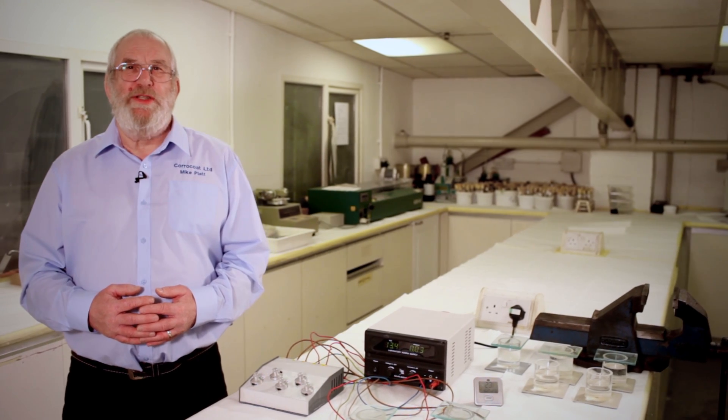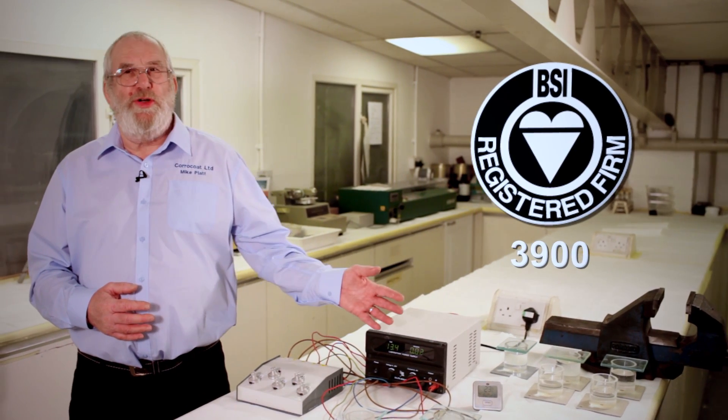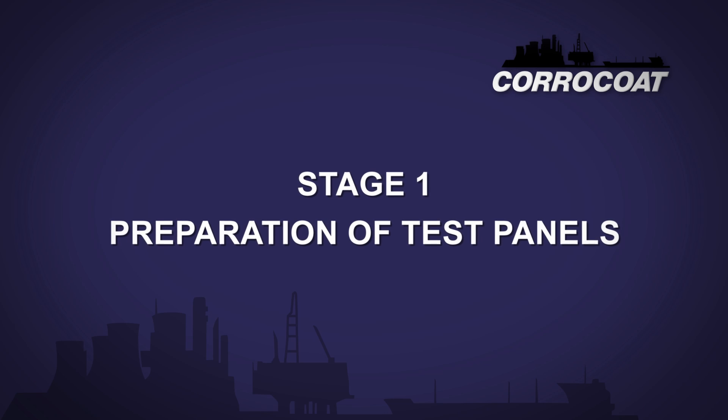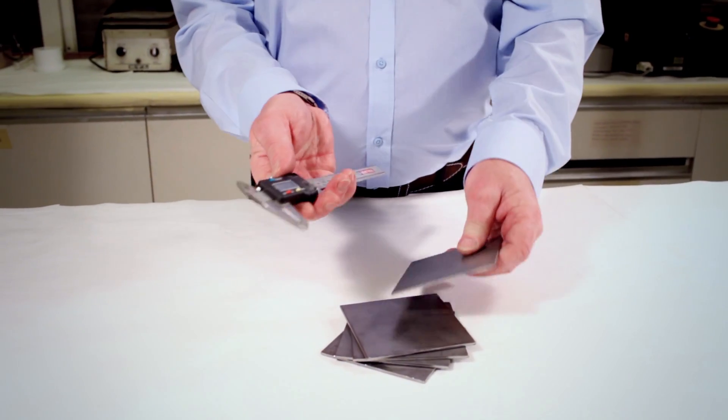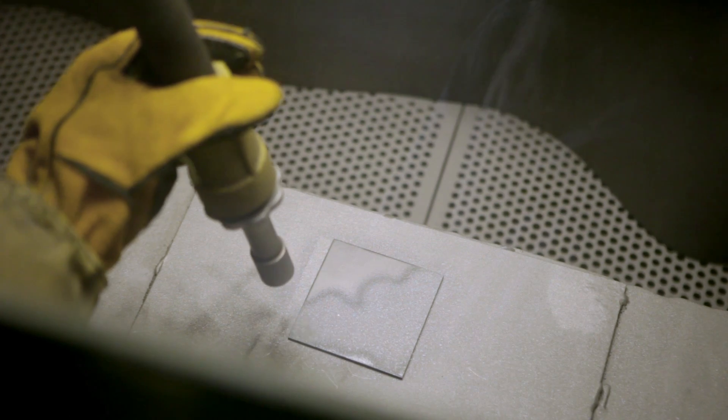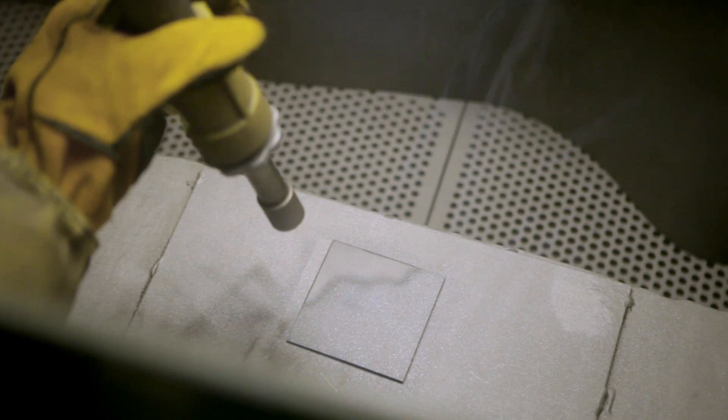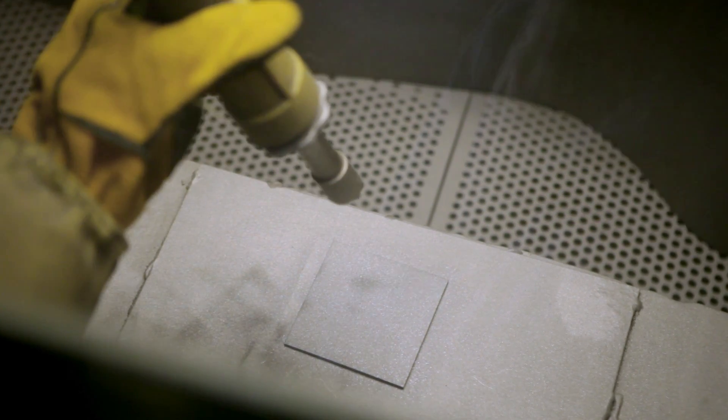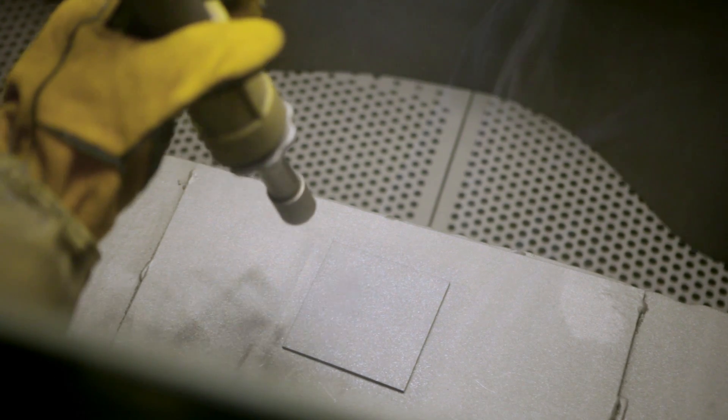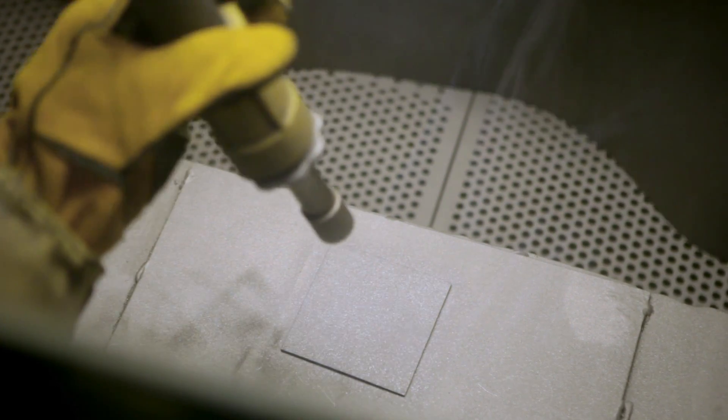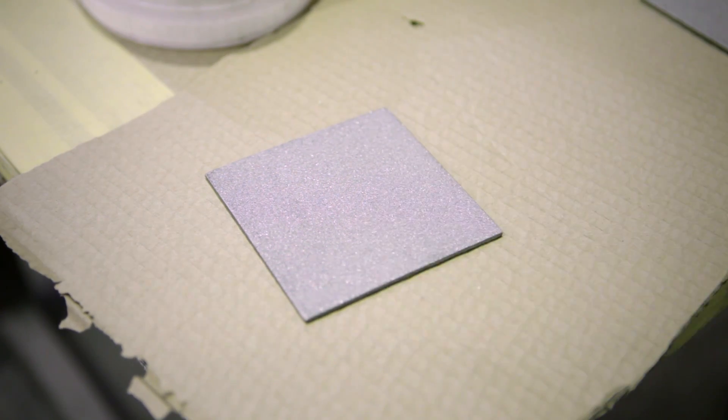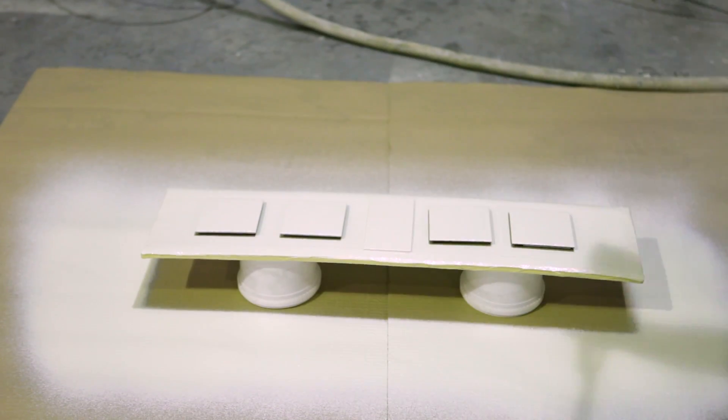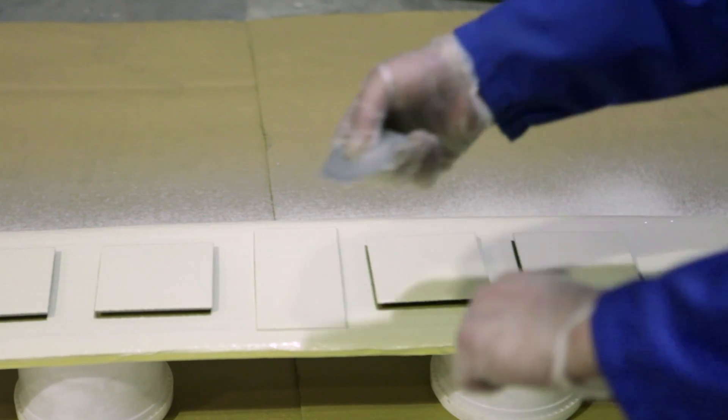The cathodic disbondment test is generally carried out in accordance with British Standard 3900. The test is carried out on mild steel test panels, 3mm thick, prepared by abrasive grit blasting to a cleanliness standard of SA 2.5 in accordance with British Standard ISO 8501-1 and vacuum to remove all grit blast residues and dust. The plate is prepared to the specification and the coating applied to the manufacturer's recommendations.